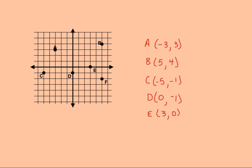The last coordinate to find is point F. I travel on the lines to the right 1, 2, 3, 4, 5 spaces — that's positive 5. Then I go down 1, 2 spaces, so going down is a negative 2. That's how we plot points or find the coordinates for points on the rectangular coordinate system. Thank you for watching.